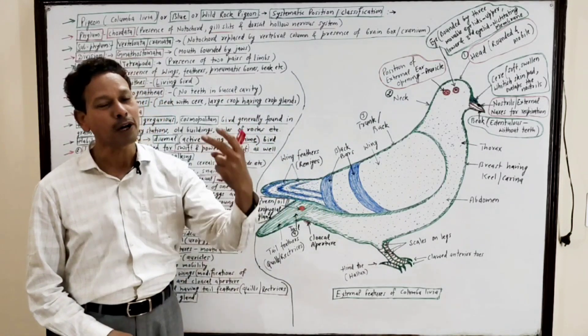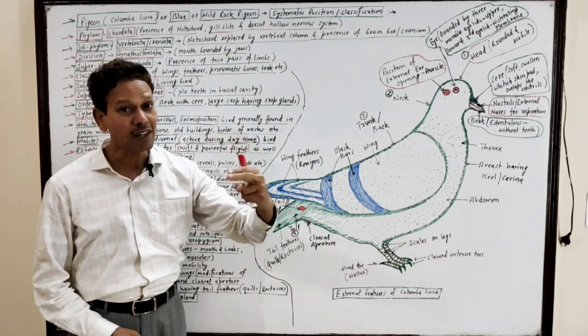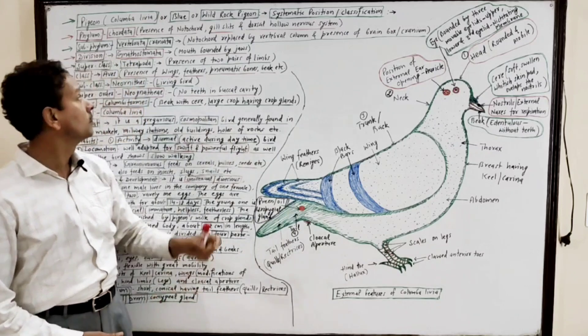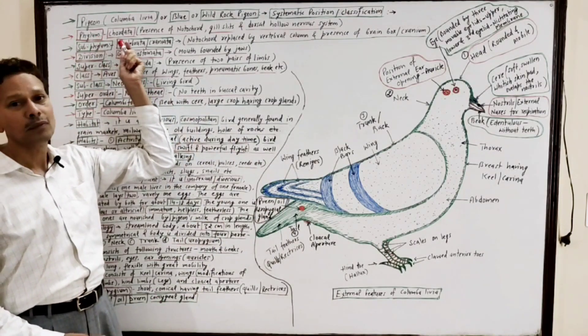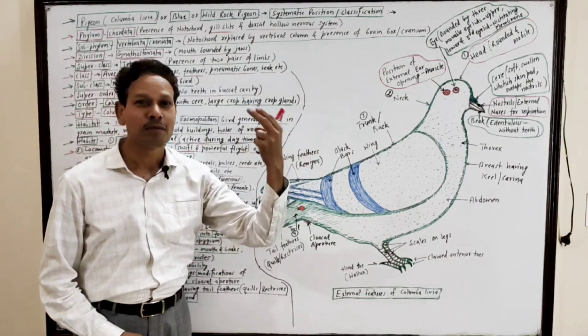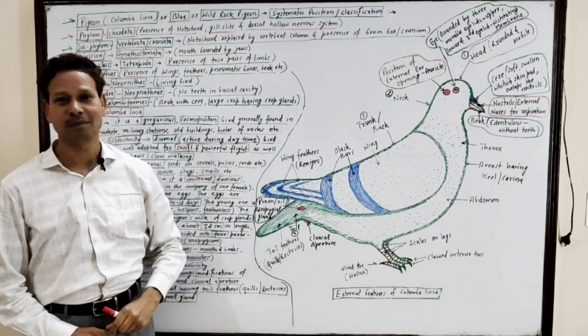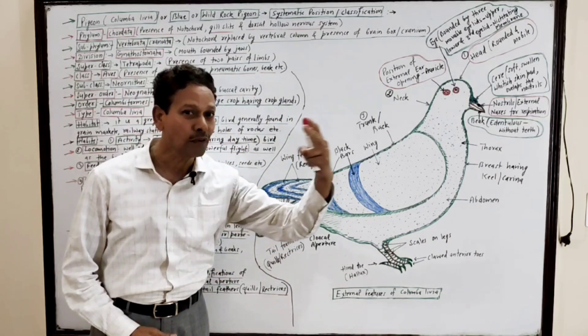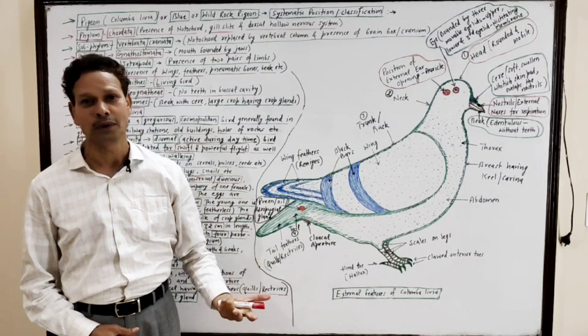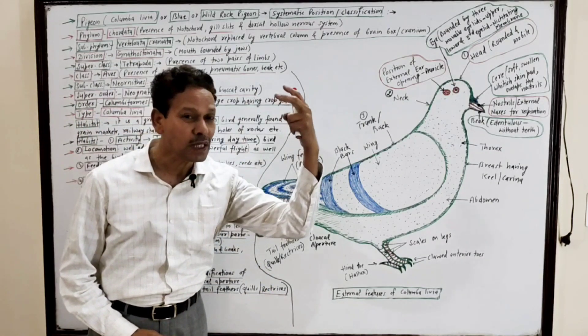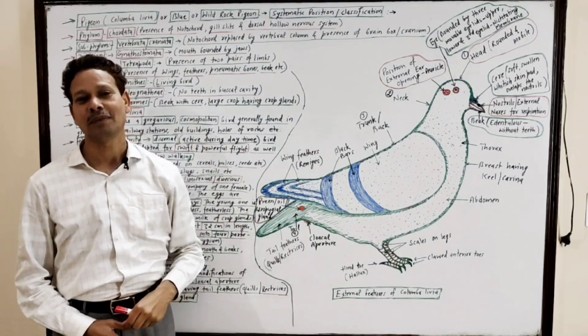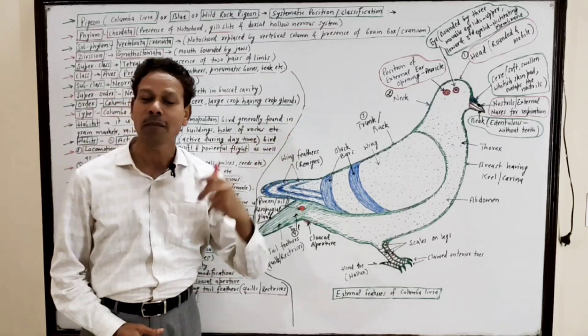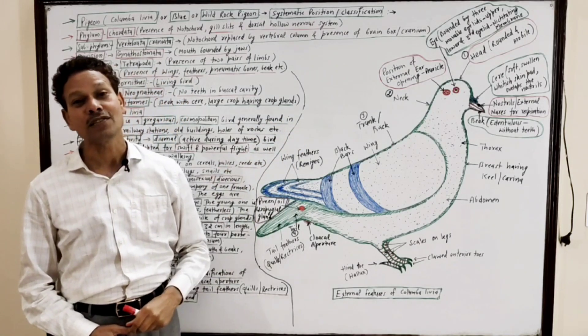First, classification of pigeon Columba livia. This is an important question carrying two to three marks. Phylum Chordata - dear students, pigeon belongs to phylum Chordata because in its life history it shows presence of a solid rod-like notochord, the nervous system which is dorsal hollow nervous system, in thoracic region presence of gill slits, and the last terminal part of body that possesses tail.